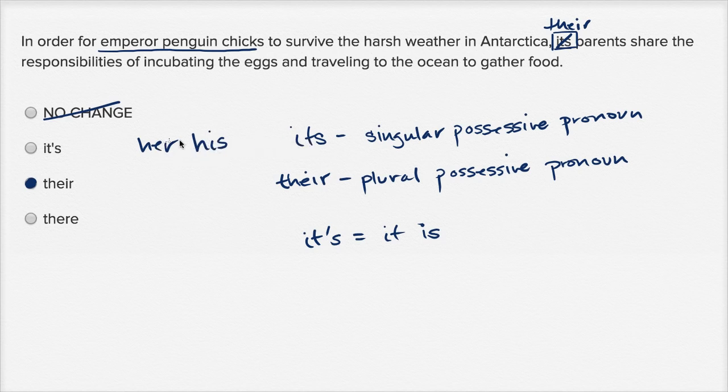So her, his, its. In any of these situations you wouldn't have an apostrophe. Its with the apostrophe that is it is. Now we already talked about their as being a plural possessive pronoun and the right answer here. And then you have there which sounds exactly the same but it is spelled t-h-e-r-e. And that one you would say hey I didn't go there.